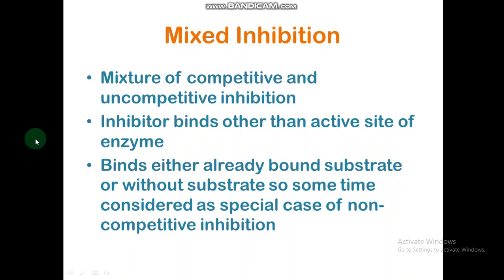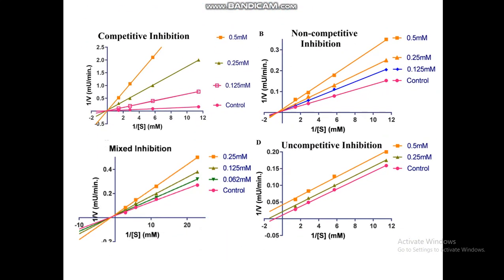In case of mixed inhibition, it is a mixture of competitive and uncompetitive inhibition — the inhibitor binds other than the active site of the enzyme and finds either an already-bound substrate or without substrate. It is sometimes considered a special case of non-competitive inhibition. In mixed inhibition, all lines will converge somewhere between the x and y-axis. Today we will discuss competitive inhibition graphs, then non-competitive, uncompetitive, and mixed inhibition in subsequent videos.